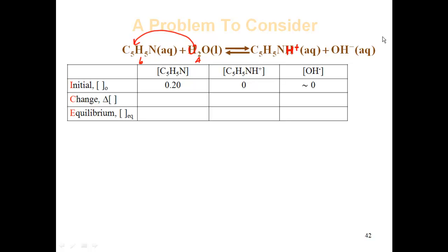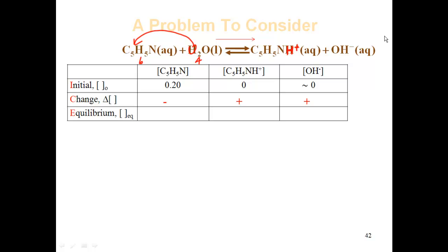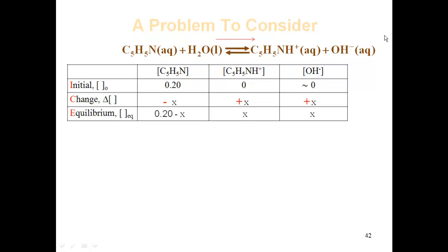Since products start at zero, the reaction proceeds to the right — which should be the case for all this acid-base stuff. Going to the right means minuses on the reactant side and pluses on the product side. The change is x for each species — it's all one-to-one. The equilibrium row is 0.2 minus x, x, and x.